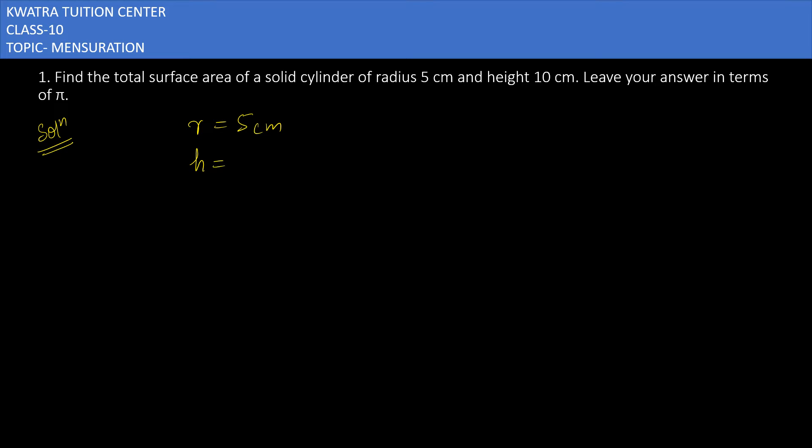Height is 10, and you have to find the total surface area of cylinder. The total surface area of cylinder is 2πr(r+h). Now you can put all the values in it.